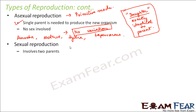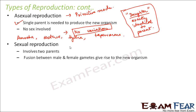In sexual reproduction, two parents are involved — you cannot produce new organisms with just one parent. Here, fusion between male and female gametes gives rise to a new organism. A gamete is a sex cell — specialized cells that help specifically during reproduction. The male releases a male gamete and the female contributes a female gamete; these fuse together to form a new cell, which then undergoes repeated cell divisions and gradually grows into a new organism.